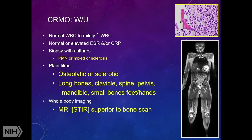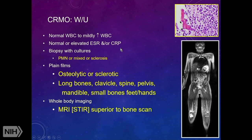How do you work these kids up? We really don't have very good tests. All of the labs can be normal, so it really is one of those diagnoses where you have to have a high index of suspicion, even if your CBC, sed rate, and CRP are normal. A typical workup might show a mildly elevated white count. Markedly elevated sed rate or CRP often suggests inflammatory bowel disease in addition to CNO.